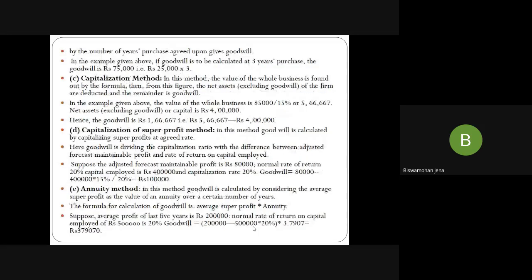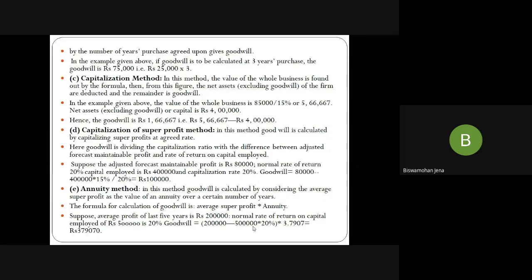Capitalization method: The whole business value = average profit / capitalization rate. Average profit = Rs. 85,000, rate = 15%, so whole business value = Rs. 85,000 / 15% = Rs. 5,66,667. Net assets given = Rs. 4,00,000. Goodwill = Rs. 5,66,667 − Rs. 4,00,000 = Rs. 1,66,667. Capitalization of super profit method: Goodwill = super profit / capitalization rate — the difference between adjusted average profit and normal profit, divided by rate of return on capital employed. Adjusted average profit = Rs. 80,000, normal rate = 20%, capital employed = Rs. 4,00,000. Goodwill = (Rs. 80,000 − Rs. 4,00,000 × 15%) / 20% = Rs. 1,00,000. Another method — annuity method: average profit × annuity rate. Average profit = Rs. 2,00,000, capital = Rs. 5,00,000, rate 20%, super profit = Rs. 2,00,000 − Rs. 5,00,000 × 20%, annuity rate = 3.7907, goodwill = Rs. 3,79,070.